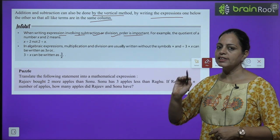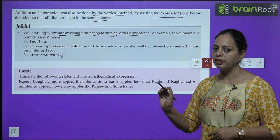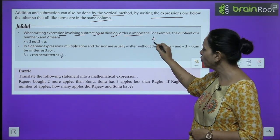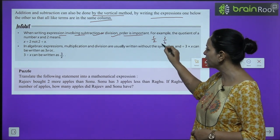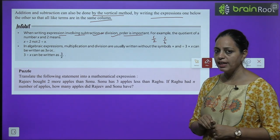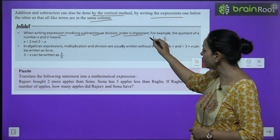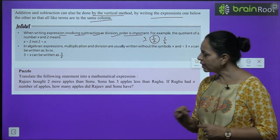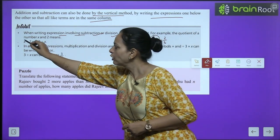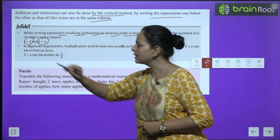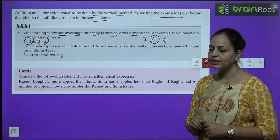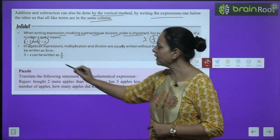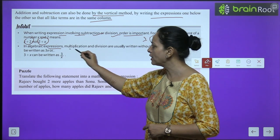Addition and subtraction can also be done by the vertical method — write the expressions one below the other so that all like terms are in the same column. Both row (horizontal) and column (vertical) methods are acceptable. Also note: when writing expressions involving subtraction or division, the order is very important. For example, 6 ÷ 2 and 2 ÷ 6 are not the same.